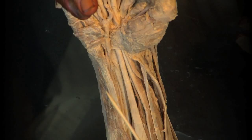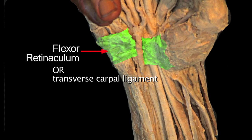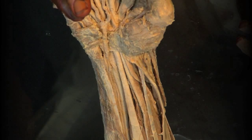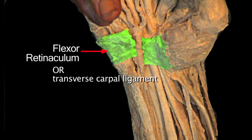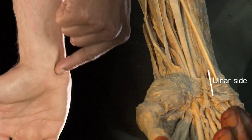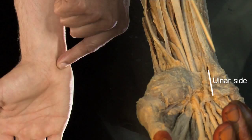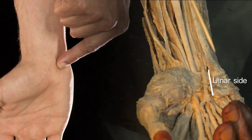So what makes up the fibrous roof of the carpal tunnel? The fibrous roof is this tough structure here. It's called the flexor retinaculum, or the transverse carpal ligament — two names for the same thing. This flexor retinaculum is a quadrangular structure which stretches across from the ulnar aspect of the carpal tunnel to the radial aspect of the carpal tunnel.